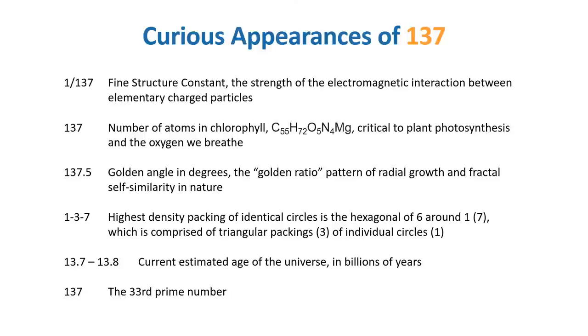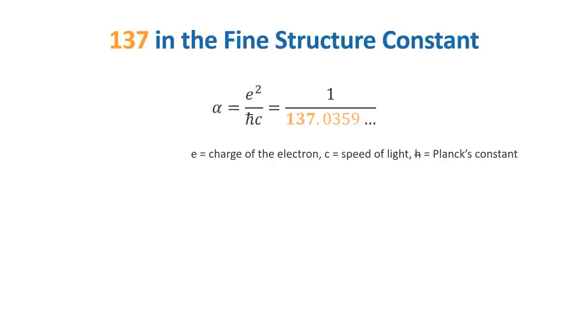Because of its importance to physics, we'll start off with the fine structure constant, denoted by the Greek letter alpha. Again, this number represents the electromagnetic interaction between charged particles. Essentially, the odds an electron will absorb a photon. Where it gets its name is that it was first discovered in the spectral lines given off by the simplest atom, hydrogen, when illuminated by photons of light.